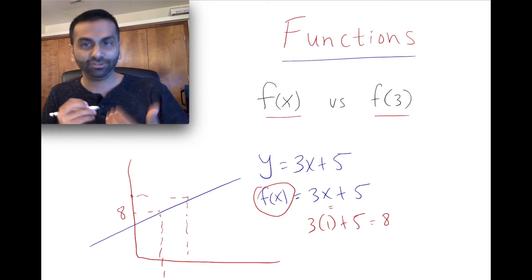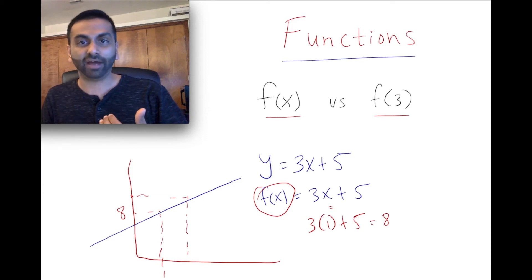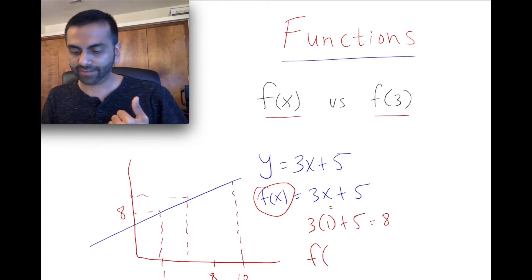So notation wise, if you wanted to find the specific output, the specific y value, when x is 8 versus x is 10 versus x is any other number, you're just going to do f of that x value. So if you wanted to find the y value when x is 10, you're going to ask yourself, what's f of 10?